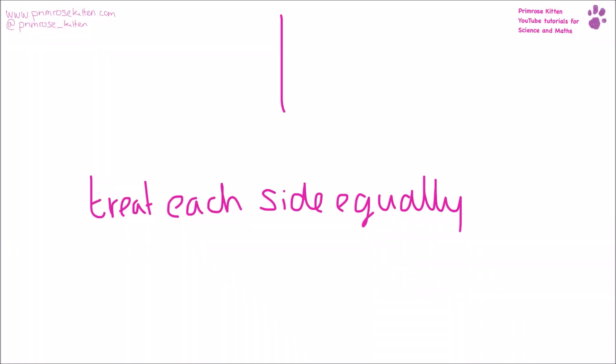When we're talking about rearranging equations, the most important thing is to treat each side equally. So if you add something to this side, you have to add something to this side. If you take something away from this side, you have to take something away from this side. If you times it by two, you have to times both sides by two. What you do to one thing, you have to do to the other thing. And then we need to be thinking about opposites.